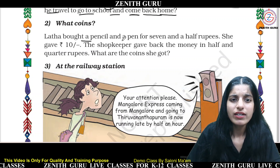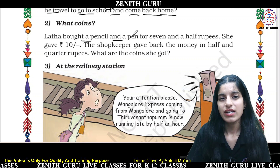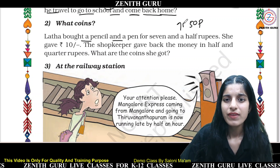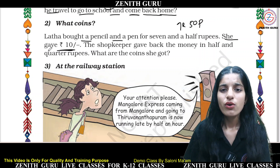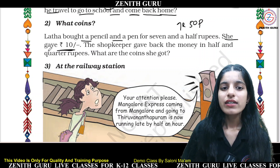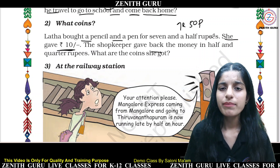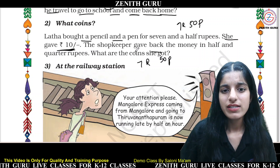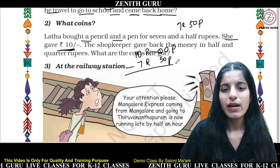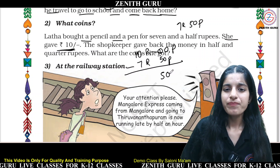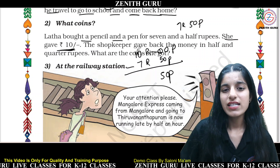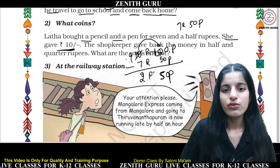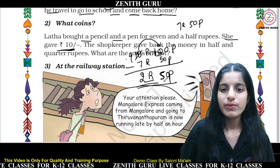Someone bought a pencil and pen for 7 and a half rupees — that is 7 rupees and 50 paise. She gave 10 rupees to the shopkeeper. So 10 rupees 00 paise minus 7 rupees 50 paise: borrow from the rupees side, 100 paise minus 50 paise is 50 paise, and 9 rupees minus 7 rupees is 2 rupees. So the shopkeeper gives back 2 rupees and 50 paise.